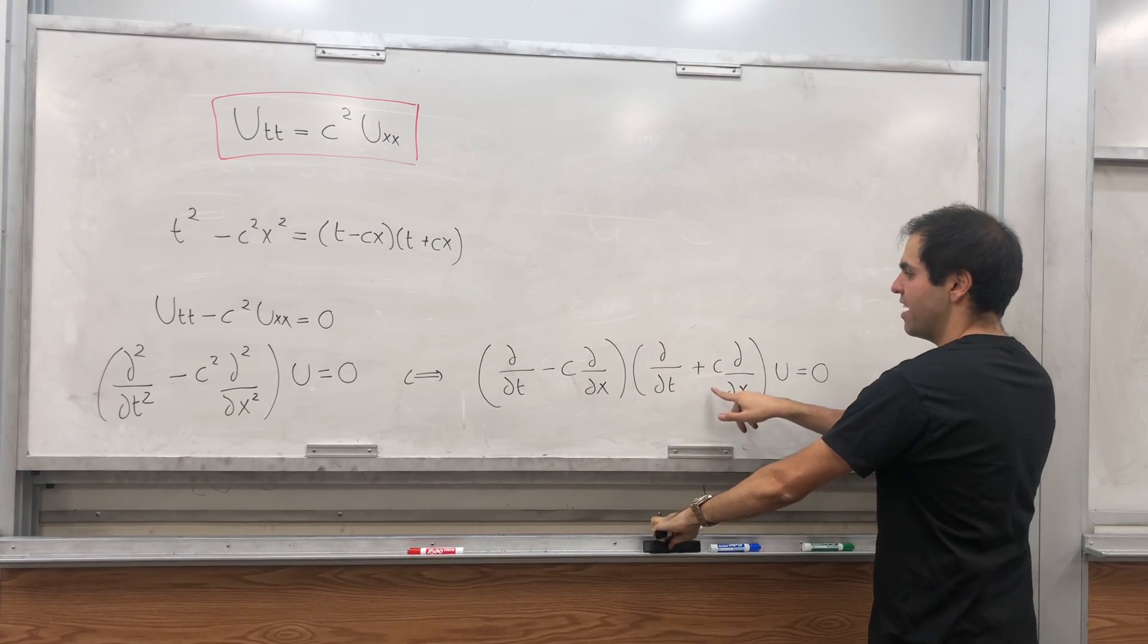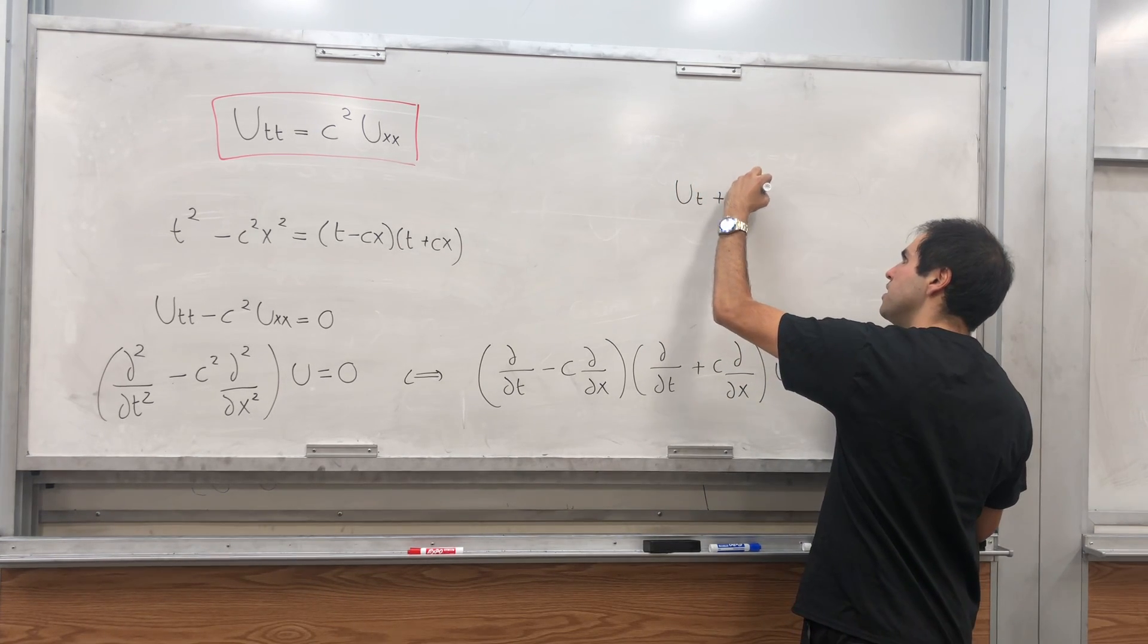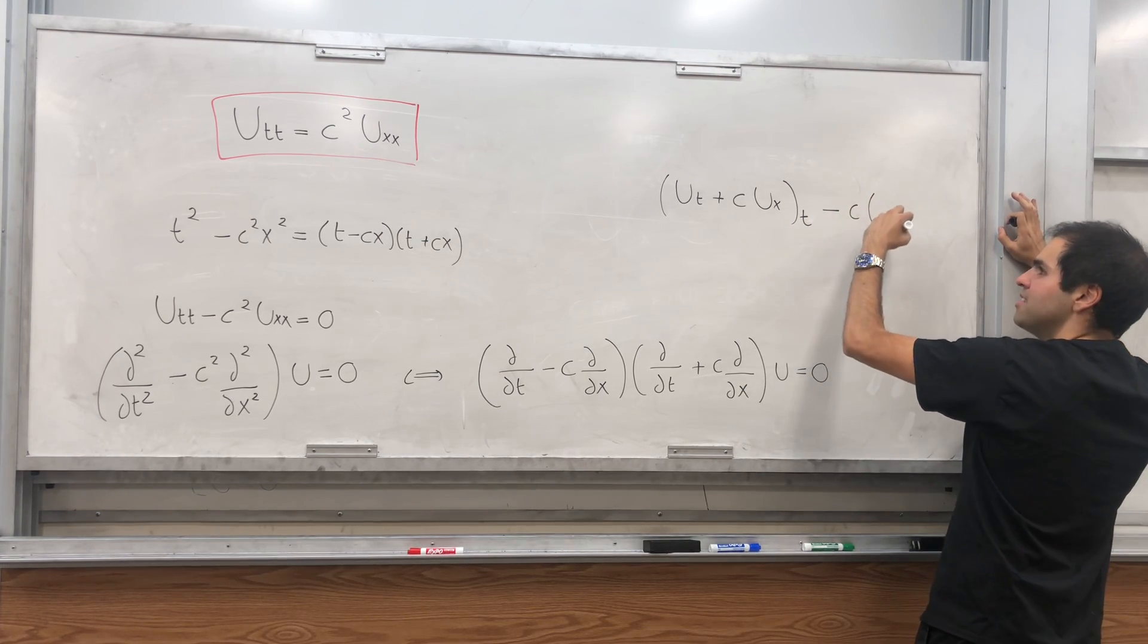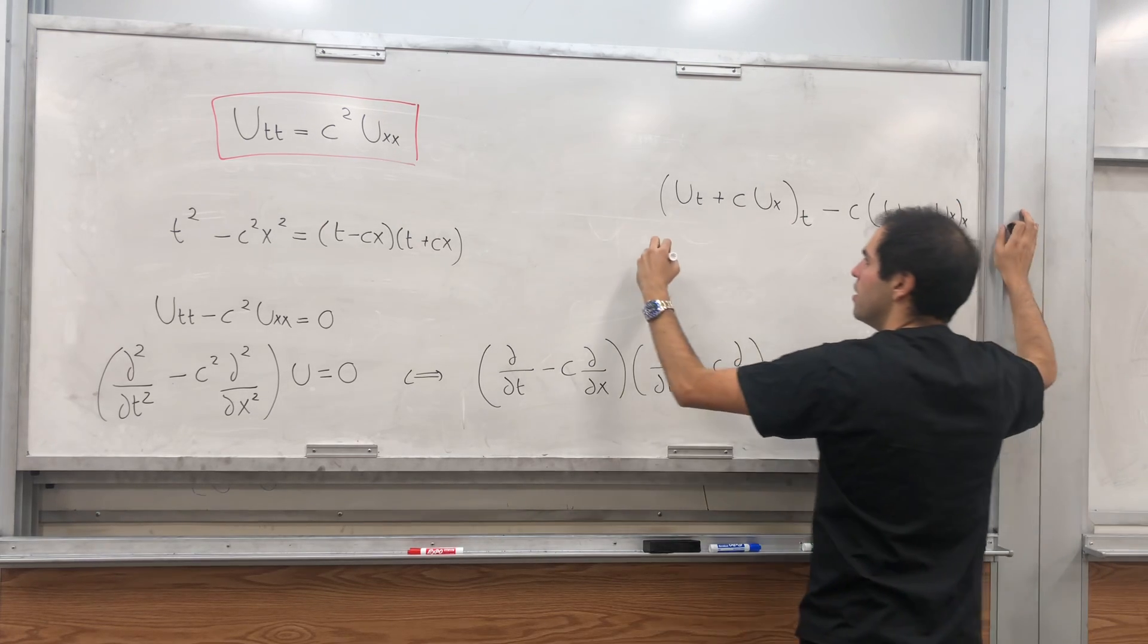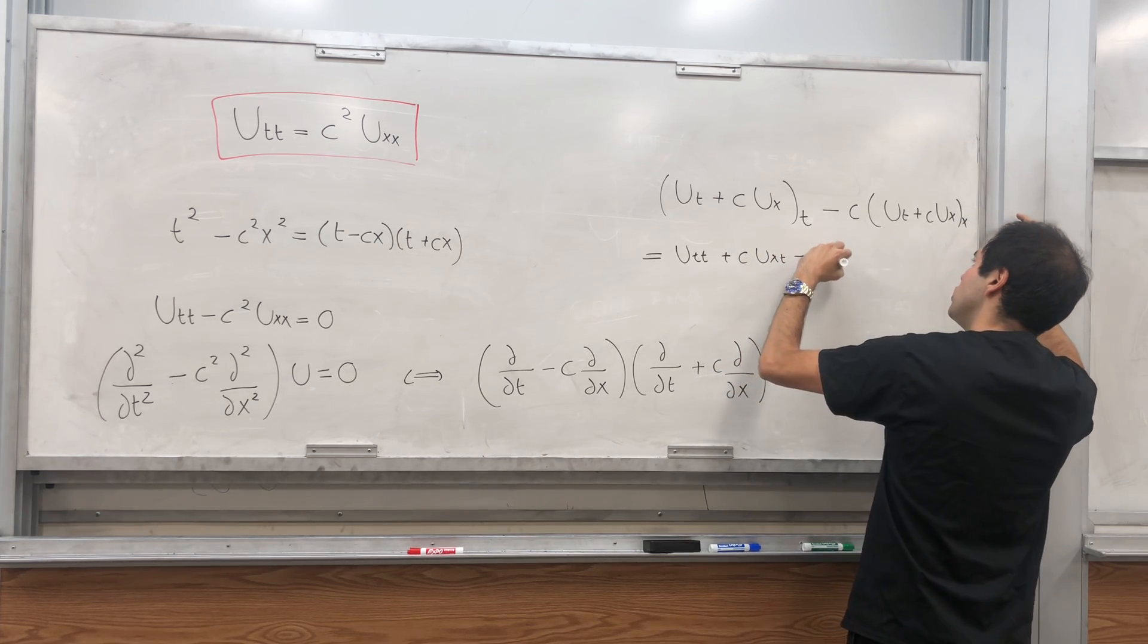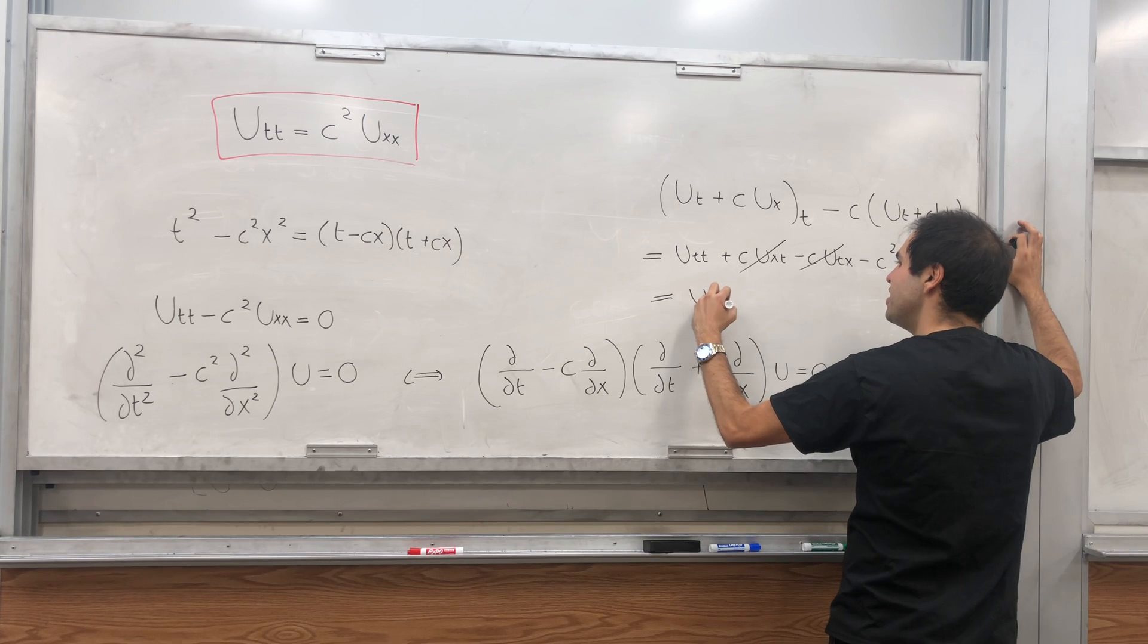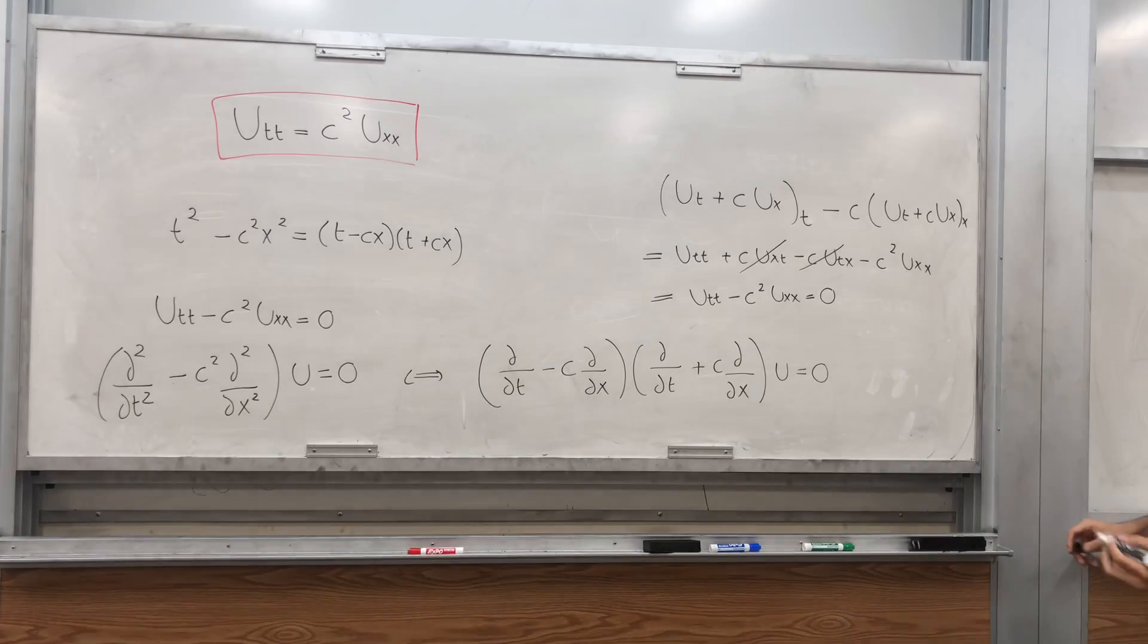Because what is del over del t plus c del over del x? That's just u_t plus c u_x. And this is just saying take this, differentiate with respect to t and do minus c, differentiate with respect to x. And then what you get is u_tt plus c u_xt minus c u_xt minus c squared u_xx. Lo and behold, the cross terms cancel out and we get u_tt minus c squared u_xx equals zero.